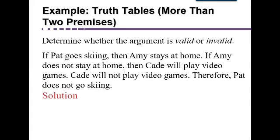Let's look at another one: a truth table with more than two premises. So this is going to be a big truth table. Determine whether the argument is valid or invalid. If Pat goes skiing, then Amy stays home. If Amy does not stay home, then Cade will play video games. Cade will not play video games; therefore, Pat does not go skiing. Wow, that's a lot to sort through.